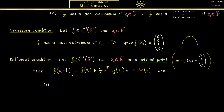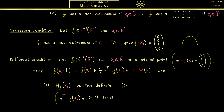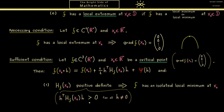The first case is that the matrix Hf is positive definite, which means the quadratic term h^T Hf h is strictly positive for all nonzero vectors h. If this term is positive, around x0 we get higher values, meaning f has a local minimum at x0. Moreover, because of the strict inequality, we also get an isolated local minimum. So in summary, a vanishing gradient together with a positive definite Hessian matrix guarantees the existence of an isolated local minimum.